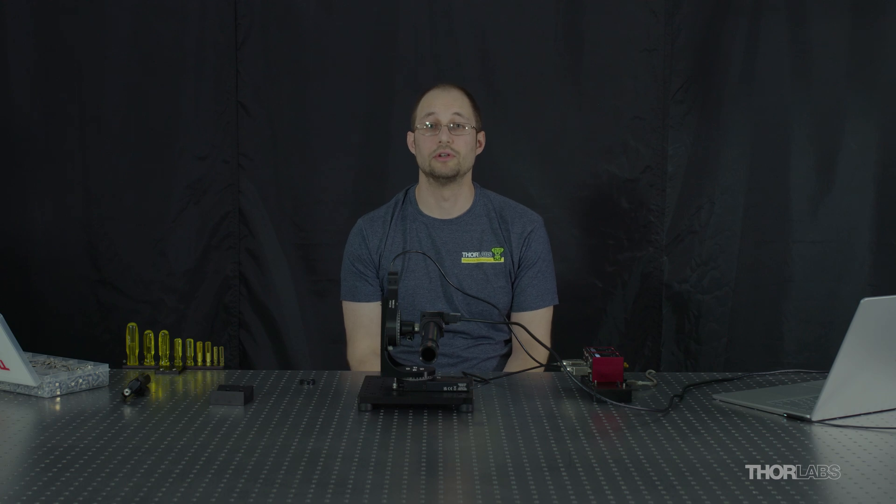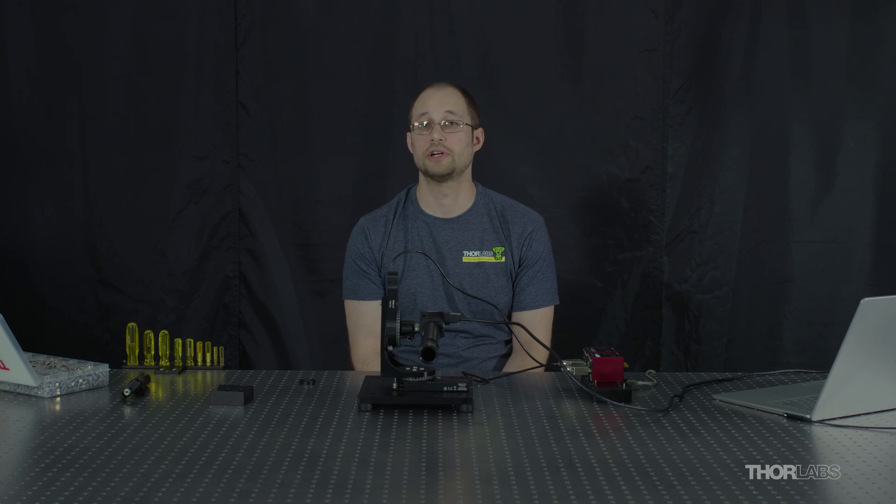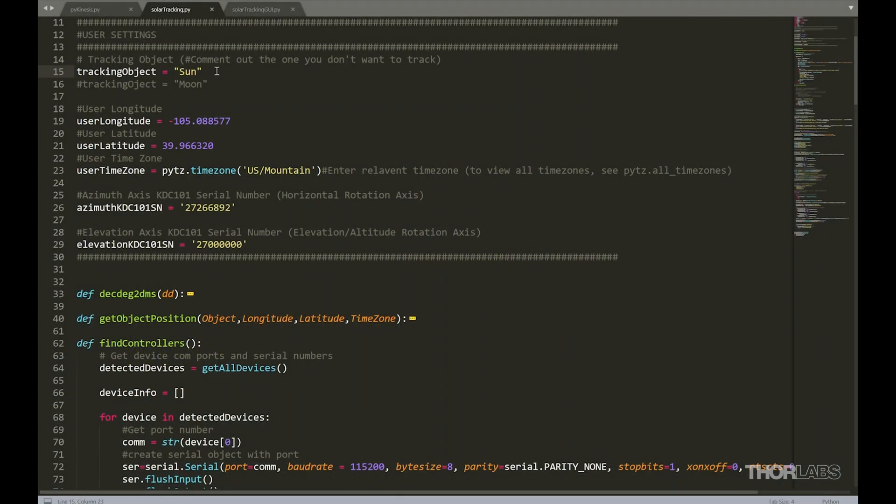Since we now have computer control of the motors, we can implement a script that would allow automated tracking of the sun. I've implemented two Python scripts that were written in Python 3.10 that allow the automated tracking of the sun. These use the Thor Labs serial communication protocol that avoids the need for the .NET drivers. As a result, they can be used on Linux operating systems such as the Raspberry Pi. The script takes whether the user wants to track the sun or the moon, the user's longitude and latitude of their position, their time zone, and the serial numbers for each axes controller.